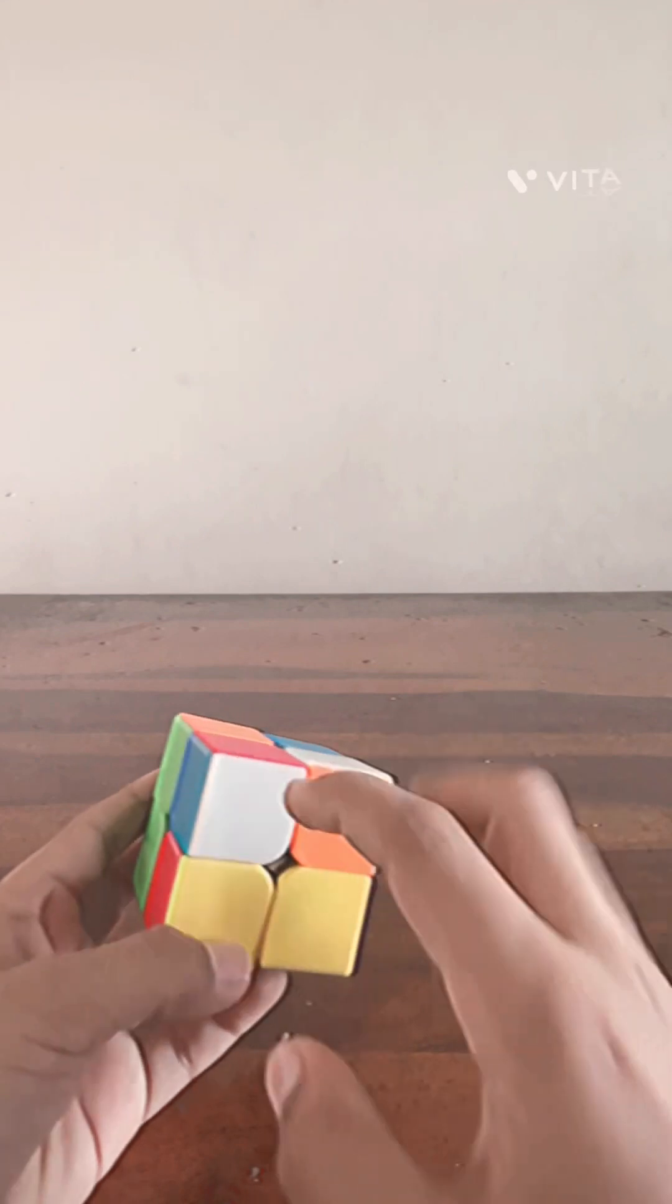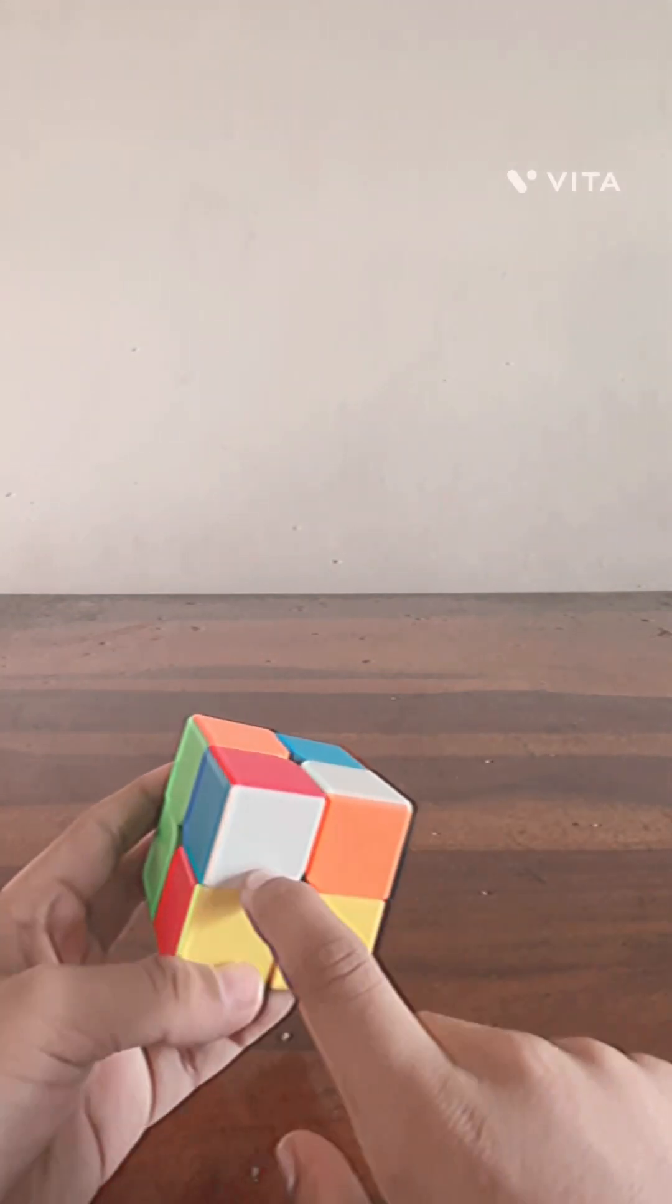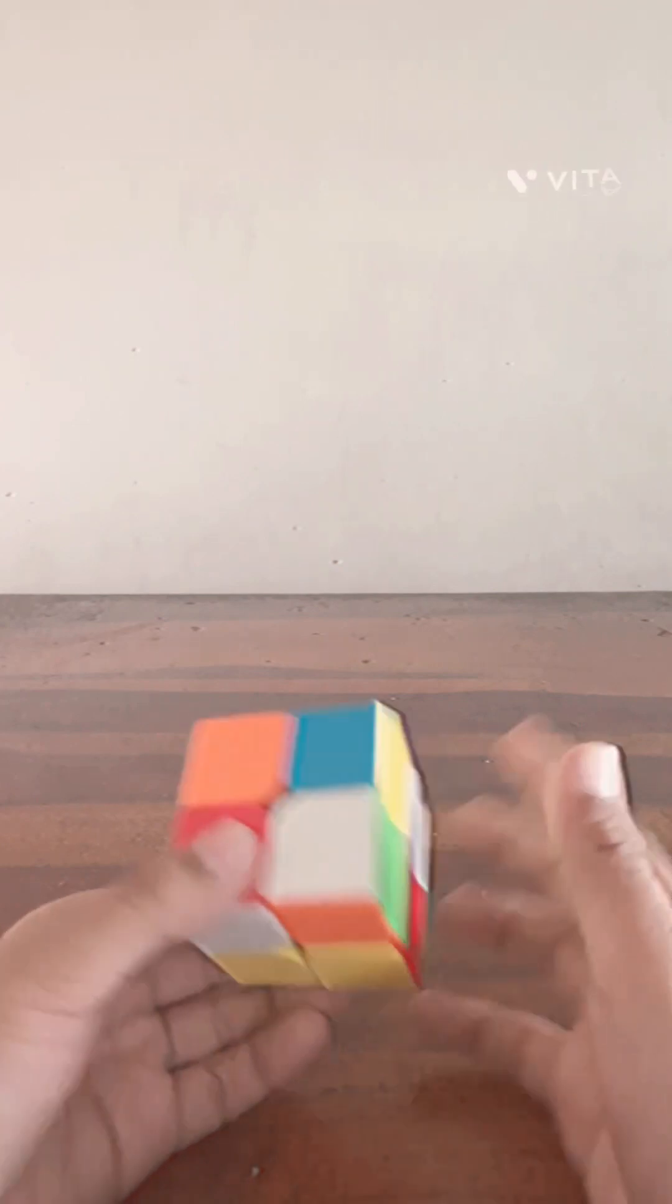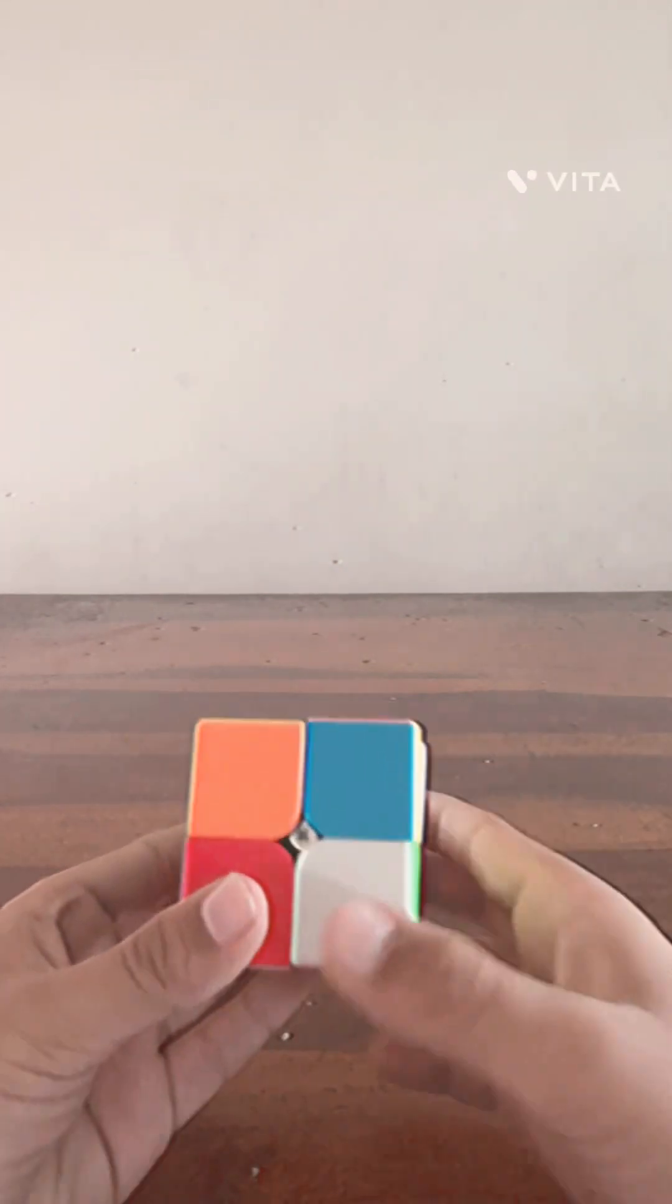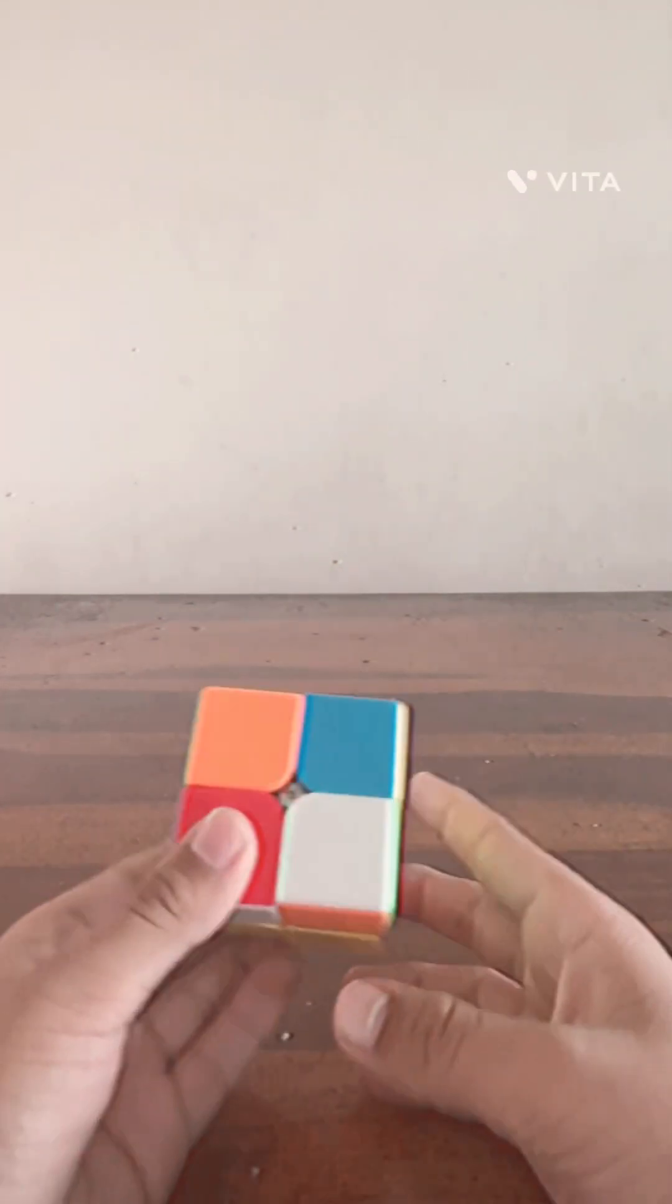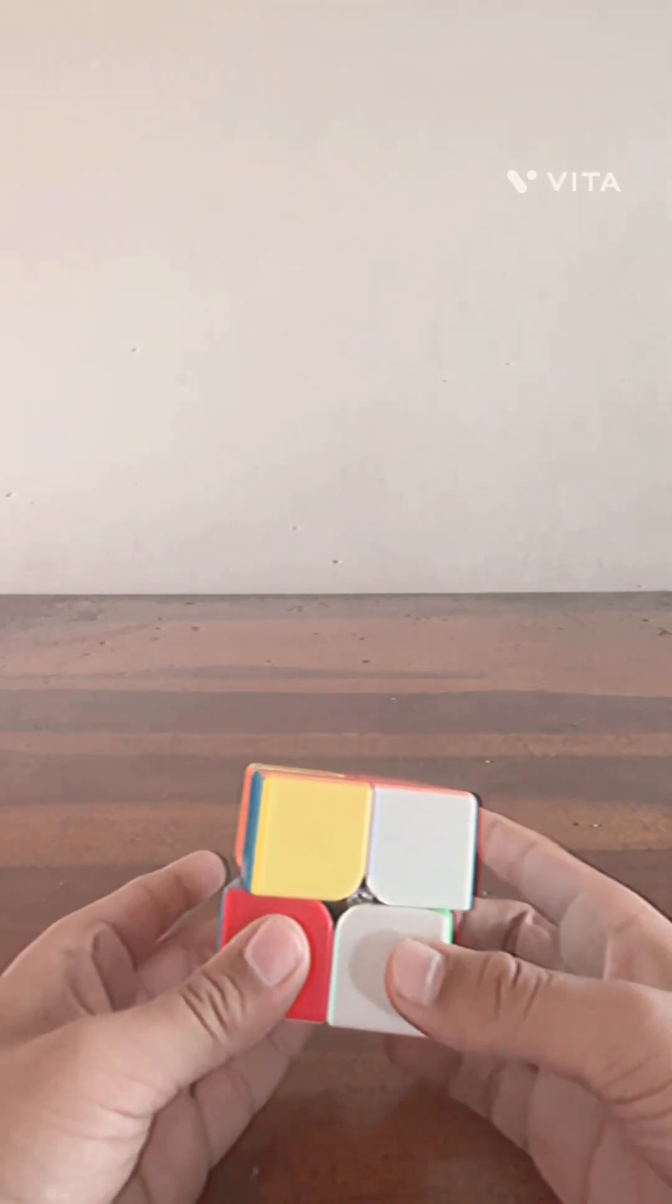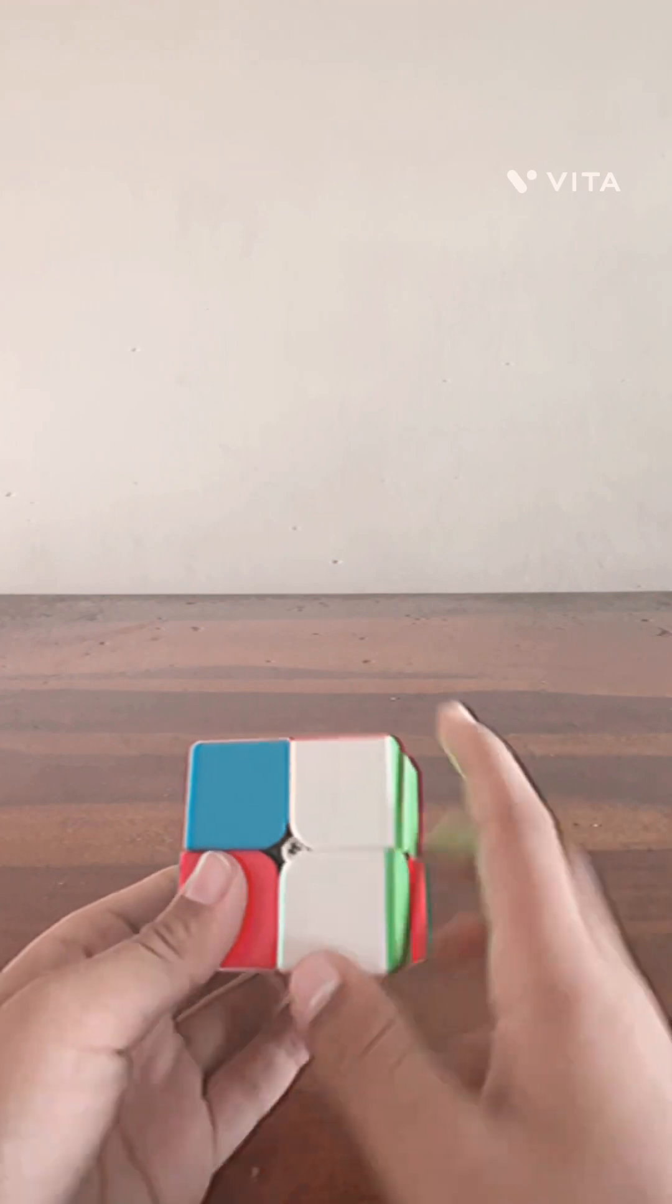So find one corner of white. This is one corner of white. Now we will hold this down. So now this is red, so we will find the white and the red one. We will keep the thumb here and find here, so it is here.